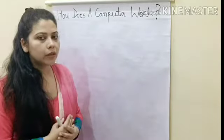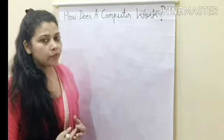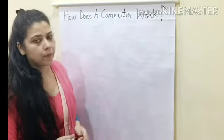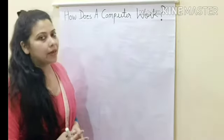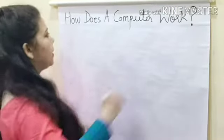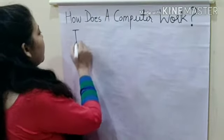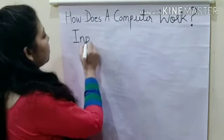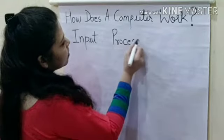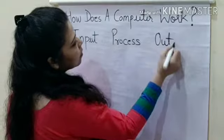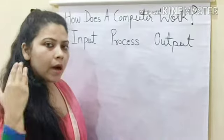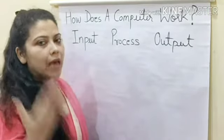So students, in the previous class I told you about the computer — how does a computer work? I told you that a computer works through the IPO cycle, that is input, process, and output. Right? Computer works through input, process, and output.